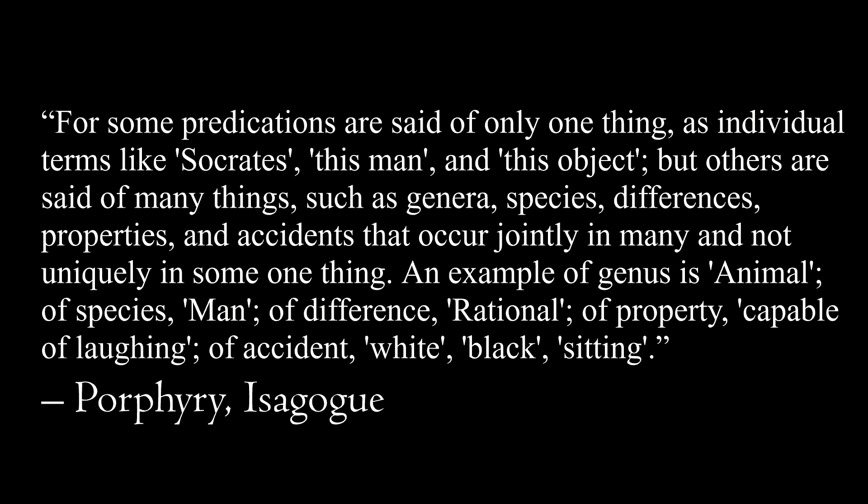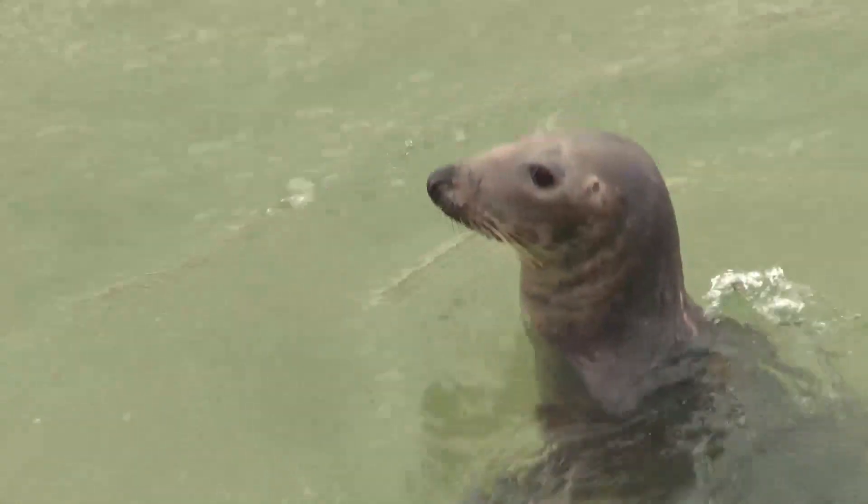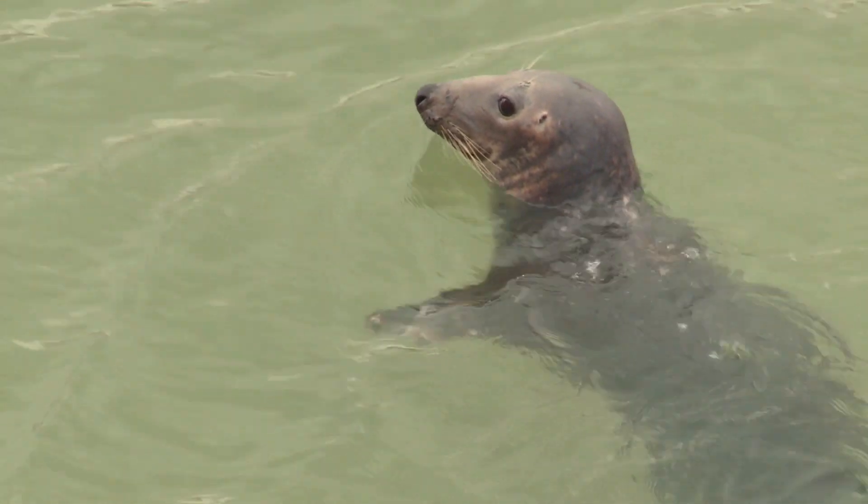For some predications are said of only one thing, as individual terms like Socrates, this man and this object, but others are said of many things, such as genera, species, differences, properties and accidents that occur jointly in many and not uniquely in one thing. An example of genus is animal; of species, man; of difference, rational; of property, capable of laughing; of accident, white, black, sitting.